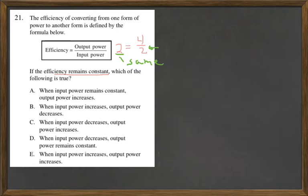output power increases. Well if we look at this, and our efficiency, which is 2, has to stay the same, and our input power, which is 2, has to stay the same, well that means that the output power is going to have to stay the same. So it cannot be A.